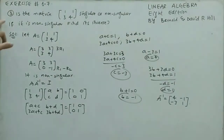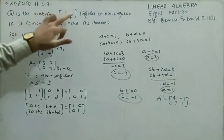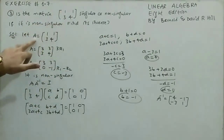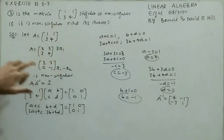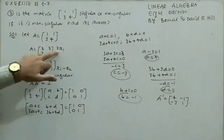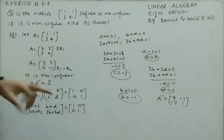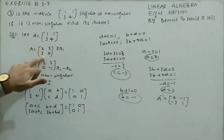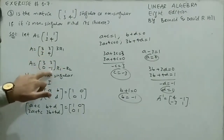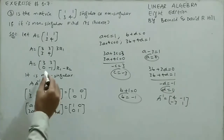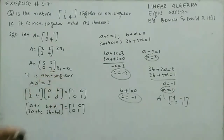Question 3: is matrix A = [1, 1; 3, 4] singular or non-singular? If non-singular, find its inverse. I multiply R1 by 3 to get [3, 3], then subtract R1 - R2: 3 - 3 = 0 and 3 - 4 = -1. Since the row is not entirely zero (we have -1), the matrix is non-singular.